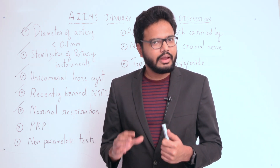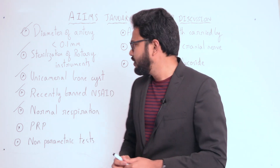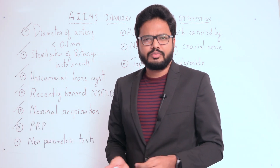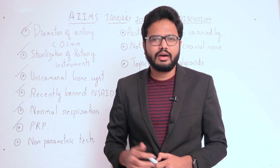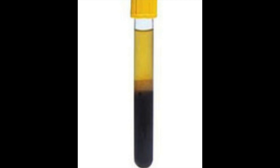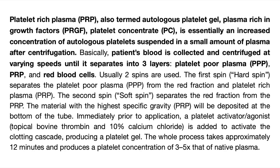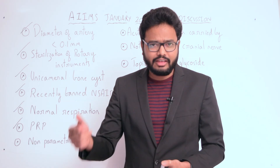There is an image-based question pertaining to PRP. As you can see in the image, there are three layers: the topmost layer is platelet-poor plasma, the middle layer is platelet-rich plasma, and the bottom layer is red blood cells. Platelet-rich plasma is also termed autologous platelet gel, plasma rich in growth factors, or platelet concentrate, obtained by subjecting the patient's blood to centrifugation.